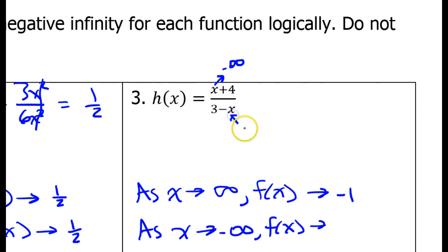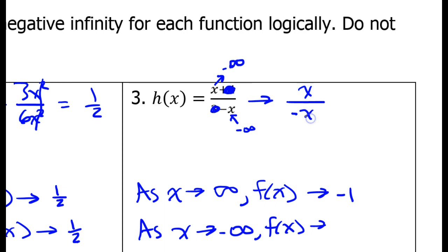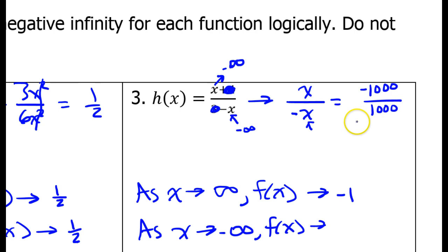As x is approaching negative infinity, the constants are going to become quickly irrelevant. So we're going to have x over negative x very soon. But we're approaching negative infinity, so imagine substituting in negative values. If x was negative 1,000, I would have negative 1,000 in the numerator. But substituting negative 1,000 in for x in the denominator — the negative x — it's going to become positive 1,000. So we're still going to get negative 1. As we approach negative infinity, the numerator is going to be negative while the denominator will be positive, but it's still going to equal negative 1.